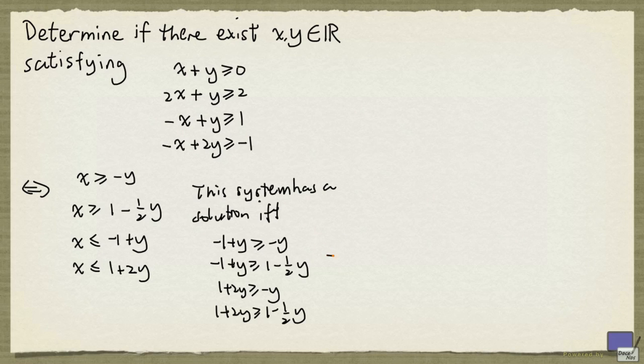And we can simplify things a bit. So this system is equivalent to 2y at least 1, 3 halves y at least 2, 3y at least minus 1, and 3 halves y at least 0.